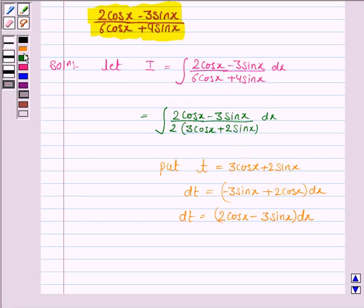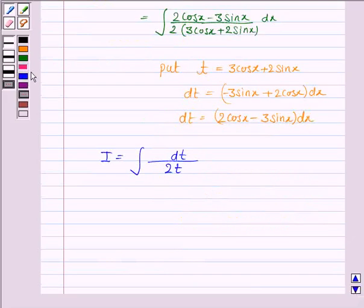So substituting all these values in the integral, the integral I becomes dt upon 2t, which can be written as 1 by 2 integral of 1 by t dt.